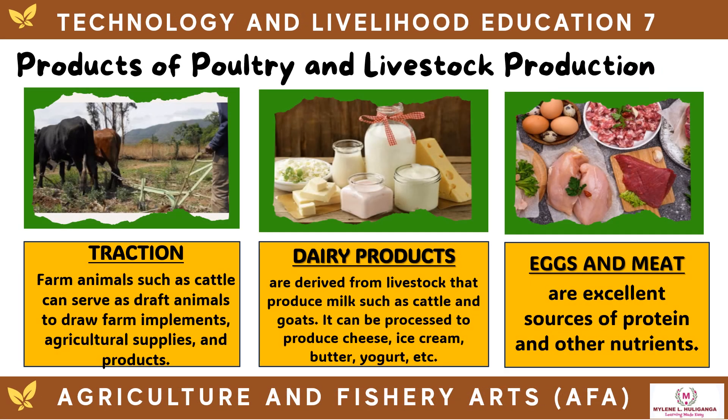For traction, farm animals such as cattle can serve as draft animals to draw farm implements and agricultural supplies. Dairy products are derived from livestock that produce milk, such as cattle and goats, and can be processed to produce cheese, ice cream, butter, and yogurt. Eggs and meat are excellent sources of protein and other nutrients.